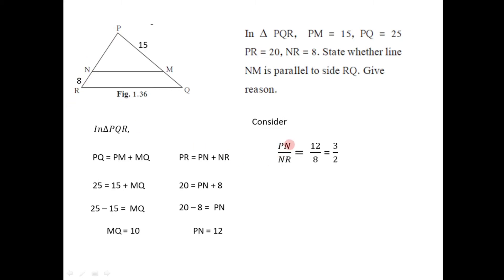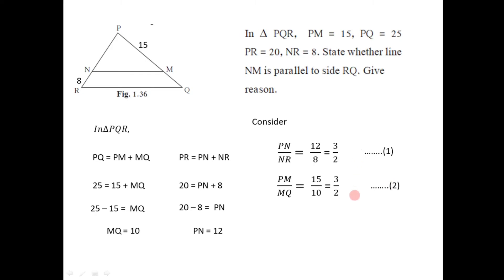The first ratio for triangle PQR is PN divided by NR. PN is 12 and NR is 8, so the ratio 12 by 8 simplifies to 3 by 2. We call this equation number one. The second ratio is PM divided by MQ. PM is 15 and MQ is 10, so 15 by 10 also simplifies to 3 by 2. We call this equation number two.